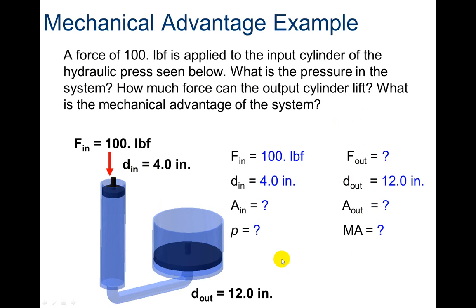A force of 100 pound-force is applied to the input cylinder of the hydraulic press. What is the pressure in the system? How much force can the output cylinder lift? What is the mechanical advantage? Looking at our sketch, we fill in all our knowns. Force in is 100 pound-force. The diameter of the input cylinder is 4 inches, so we calculate that area to get pressure. The output diameter is 12 inches, so we can calculate that area too, and then find mechanical advantage as force out over force in.